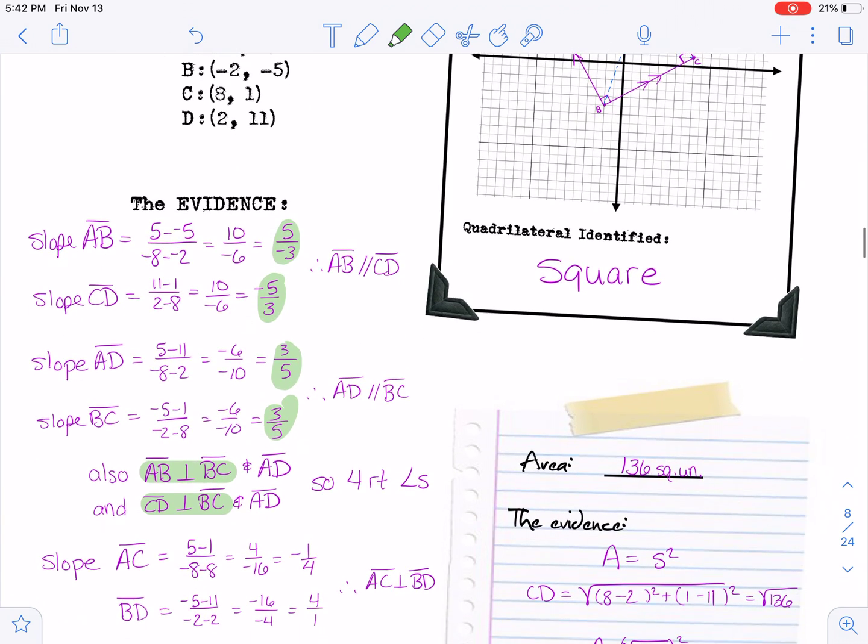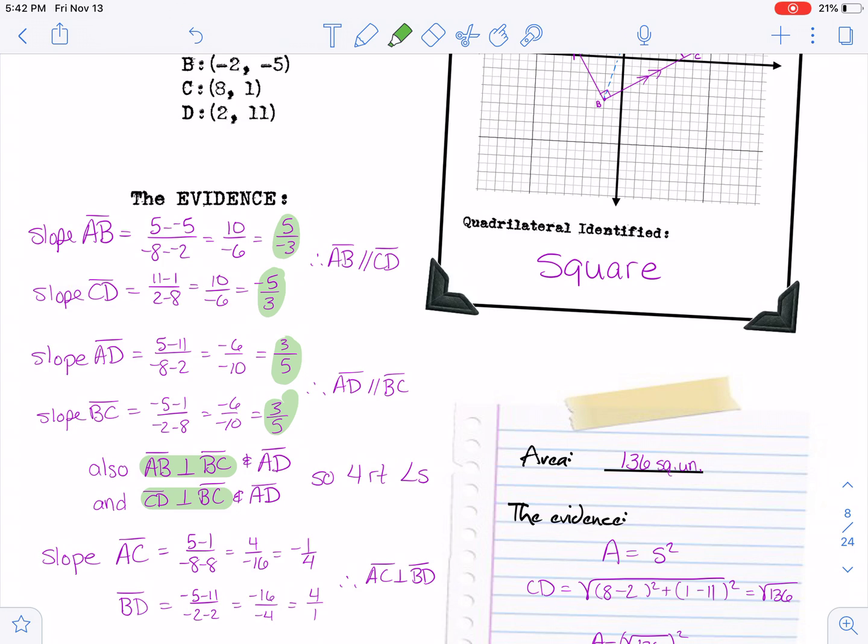Then you can find the slopes of the diagonals AC and BD. So those are also perpendicular. AC is perpendicular to BD. And so at that point you know that it's a rhombus because the diagonals are perpendicular.